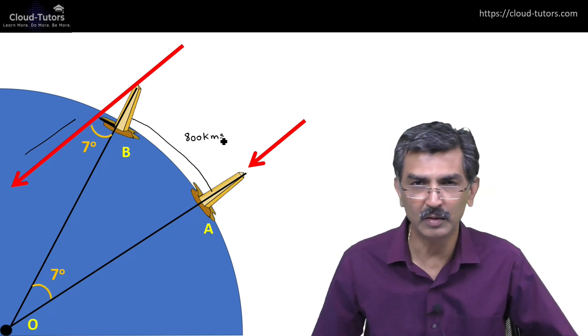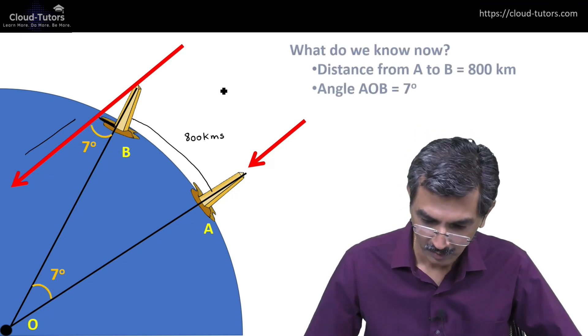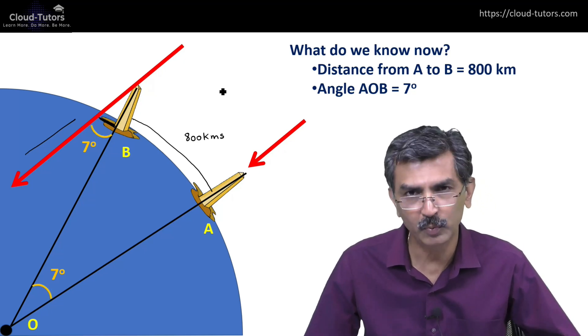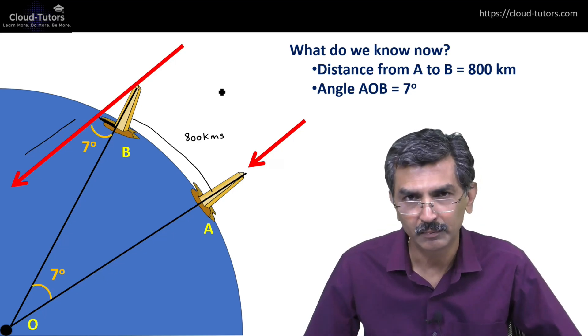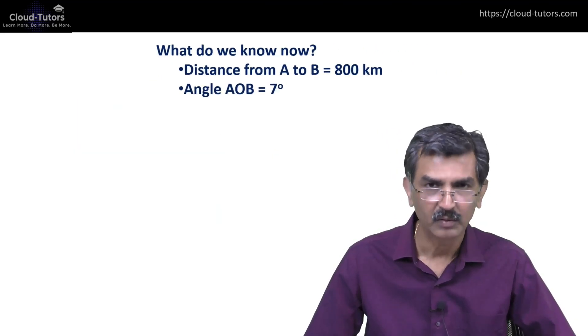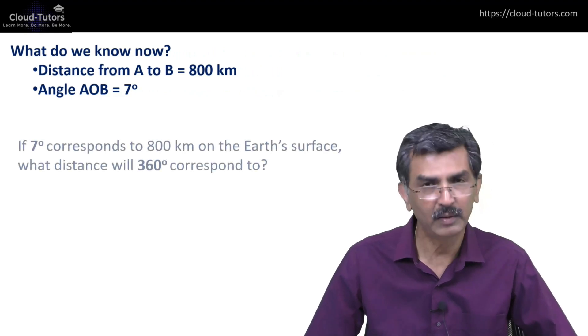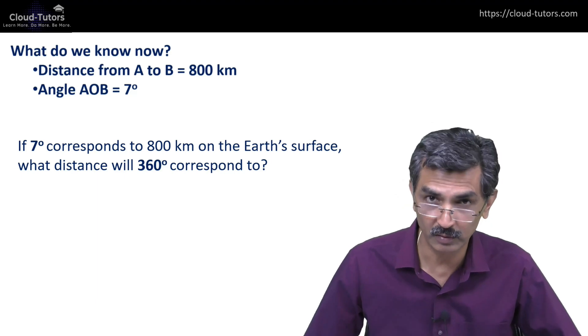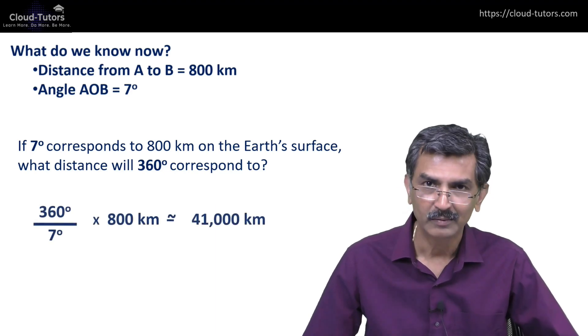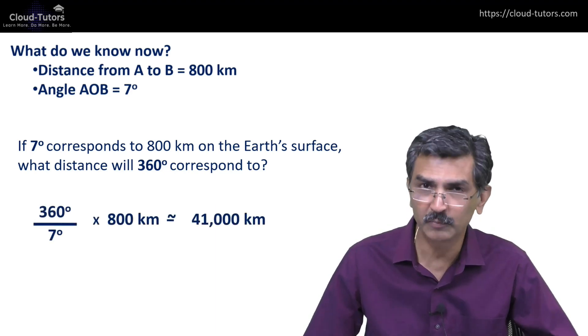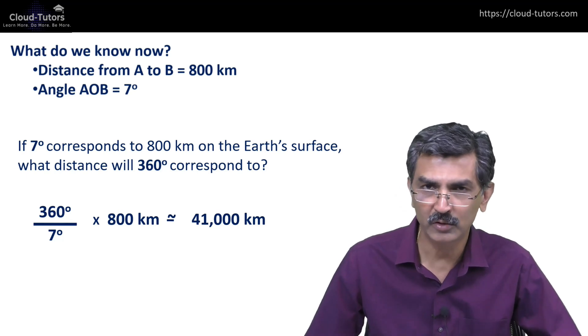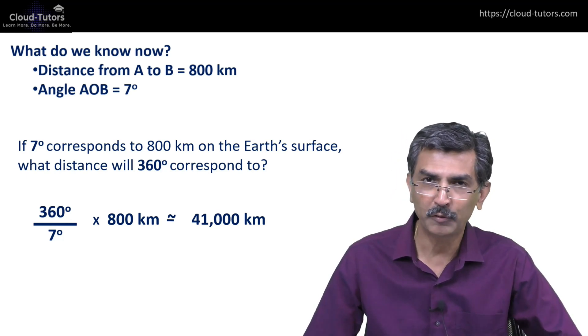Now we go to the next part of the calculation. We have known that the distance between points A and B is 800 kilometers and the angle is 7 degrees at the center of Earth. It's basic geometry then. A little bit of mathematics will tell us that if 7 degrees angle at the center of the Earth corresponds to 800 kilometers distance on the surface of Earth, then 360 degrees will correspond to the circumference of Earth, which is 41,000 kilometers. Now this is a remarkably accurate calculation for an experiment so simple.